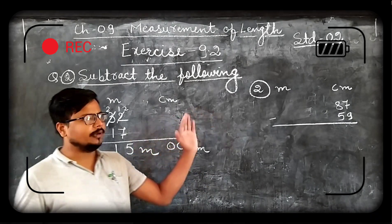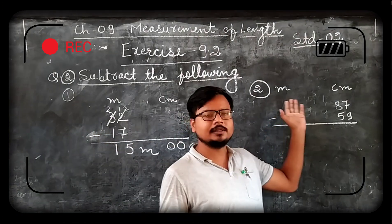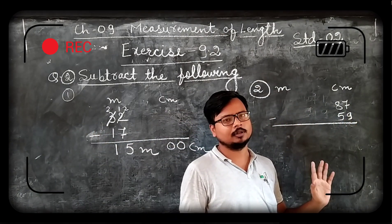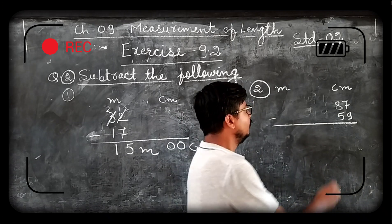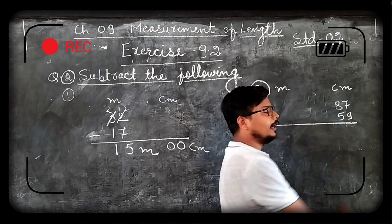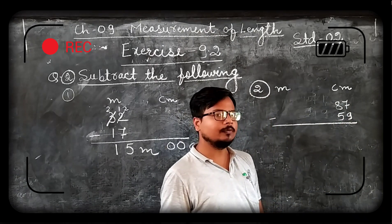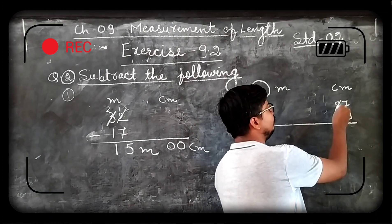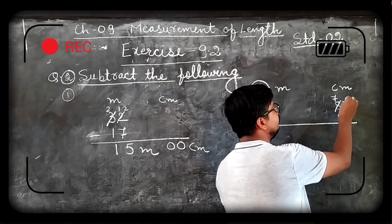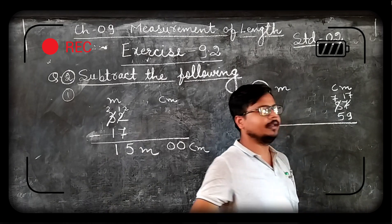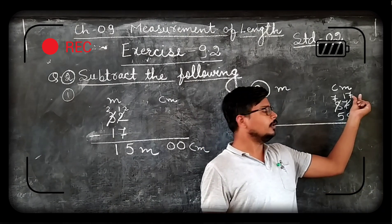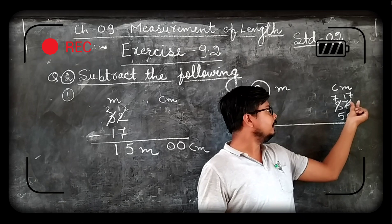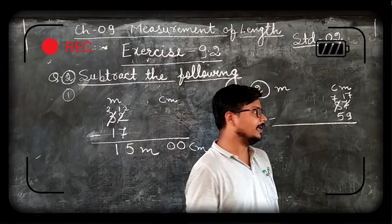Now come to next one. In this as you can see here meter is not given. Only centimeters are given. Let us subtract. From 7 we cannot subtract 9. So what we do? We carry 1 from 8. 8 becomes 7 and this 7 becomes 17. Now we have to subtract 9 from 17. So 17 minus 9 becomes 8.